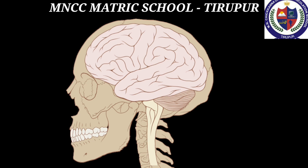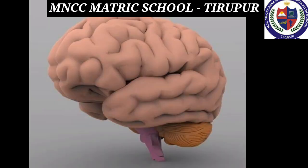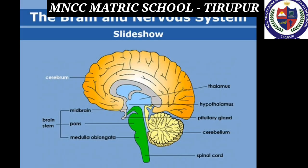The brain is protected by the skull. It has three main parts: forebrain, midbrain, and hindbrain. Looking at the image, light brown color denotes the cerebrum — that is the forebrain. Deep brown denotes the midbrain. Pink color denotes the medulla oblongata.